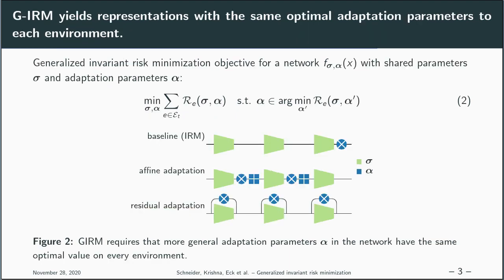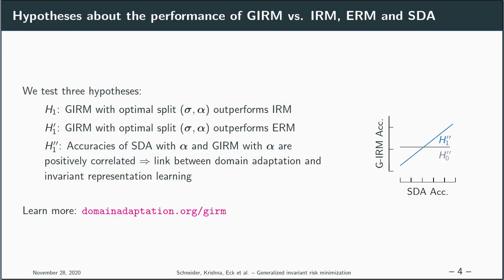We generalize this principle and require that a more general adaptation mechanism, which is potentially tuned to the problem at hand, can't be fine-tuned either. We explore if adaptation mechanisms useful for domain adaptation are also more powerful regularizers for generalized invariant risk minimization, thereby exploring a link between domain adaptation and invariant representation learning.